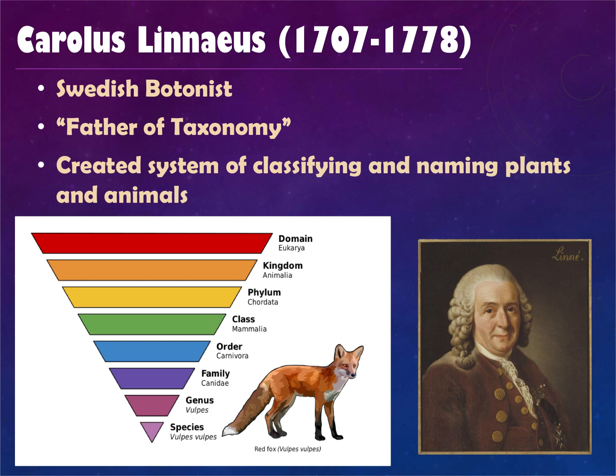Linnaeus was a Swedish botanist and is considered the father of taxonomy. His big contribution was classifying and naming plants and animals. He created the domain, kingdom, phylum, class, order, family, genus, species hierarchy — going from more general to more specific. He came up with naming a creature using its genus and species, such as the red fox being called Vulpis vulpis.